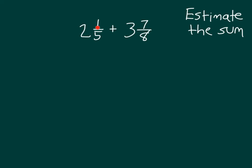What will we do with 2 and 1 fifth? Let's think about rounding it and think about benchmark numbers. 2 and 1 fifth is close to 2 — it's only 1 fifth more than 2. Let's take a look at a number line and see where these numbers would fall.